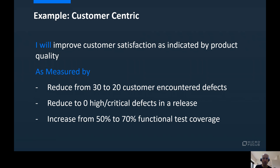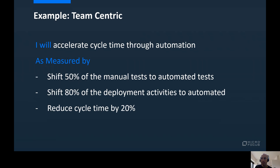Let's review another example. This is a team-centric example. The main goal is accelerating cycle time, and the hypothesis is that it can be achieved by moving from manual activities to automated activities. The metrics were developed collaboratively by the stakeholders and here as well should be measured continuously to track progress towards the main goals and adapt based on feedback.